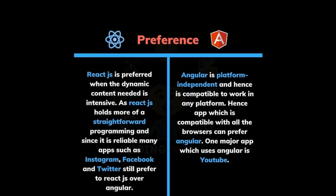Preference-wise, ReactJS is preferred when the dynamic content needed is intensive. As ReactJS holds more of a straightforward programming approach and since it's reliable, many apps such as Instagram, Facebook, and Twitter still prefer ReactJS over Angular. However, Angular is platform-independent, and hence it's compatible to work in any platform, so apps which need compatibility with all browsers can prefer Angular.